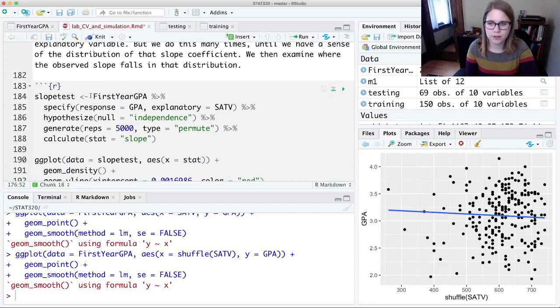So here's how it works. This is code from the infer package, so you might need to install that and you definitely need to load it at the top of your lab. What we're going to do is we're going to take the first year GPA data,